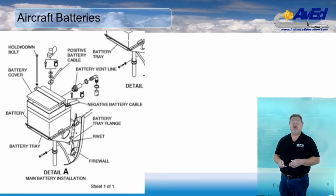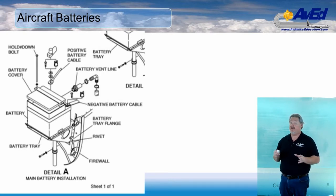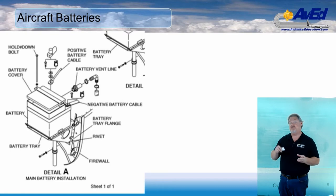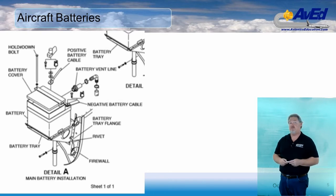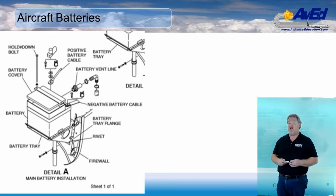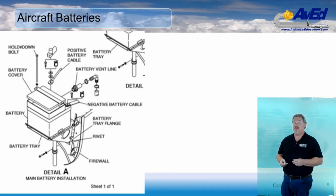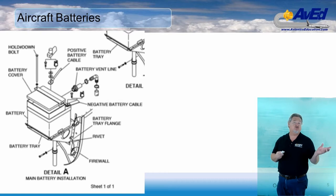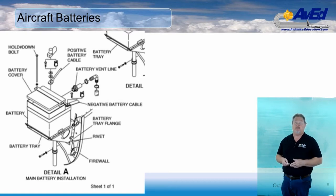Some battery manufacturers recommend a vent system like the one shown here. Fresh air is brought into the battery box from an intake vent, then that air is passed over the top of the battery collecting the vapors, and then sends it to a vent tube that connects to a sump jar filled with sodium bicarbonate — the baking soda we talked about before. The baking soda jar at the bottom will neutralize the sulfuric acid in the vapors and send clear air overboard. The battery manufacturer will recommend a maintenance item to ensure this is inspected at least annually to clean the jar and replenish the baking soda.